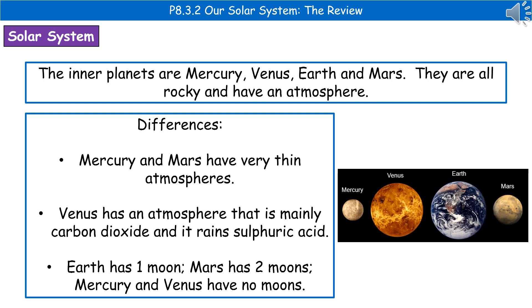Earth has one moon, which if you look into the sky you can see. Mars has two moons, and Mercury and Venus have no moons.